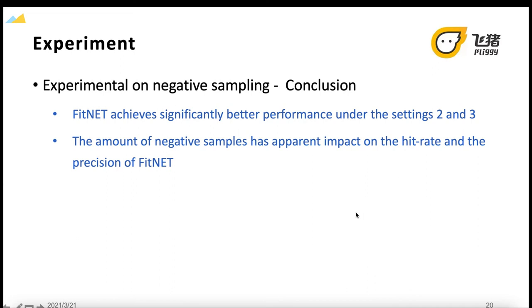Second, the amount of negative samples has apparent impact on the hit rate and the precision of FitNet. In specific, with the increase of negative samples, two metrics are improved at birth, since the increase of negative samples enhances the generalization ability of the travel trend model in differentiating between positives and negatives.